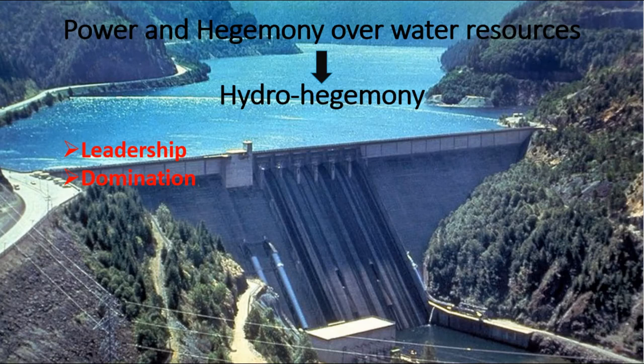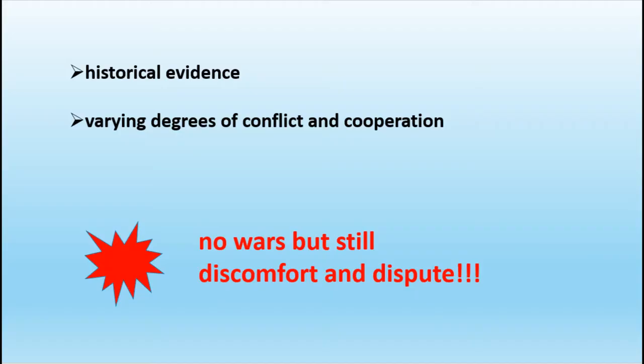The concept of hydrohegemony by Zeitoun and Warner is used here. It is based on power and hegemonic relations. Hydrohegemons can act as a leader by giving some benefits to other riparians, or they can be dominant and encroach upon others' rights. Either way, the result is that water is used by the powerful state disproportionately to others. The question is how this approach prevents conflicts or wars and secures peace.